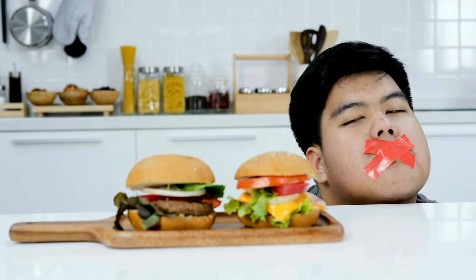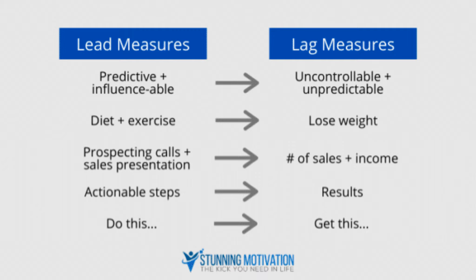Instead, you should act on the lead measure. The lead measures for your weight loss goal could be something like the amount of calorie intake every day and the hours you spend exercising in the gym. You can control how much calorie you consume in a day because you can choose what you put into your mouth, and you can also control how many hours you are going to spend working out in the gym. When you work on these two lead measures, you will automatically move yourself toward reaching your lag measure goal, which is to lose 10 pounds in a month.